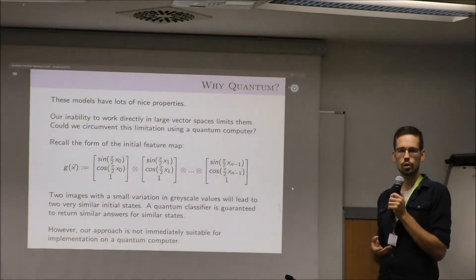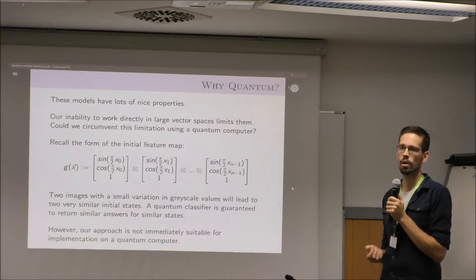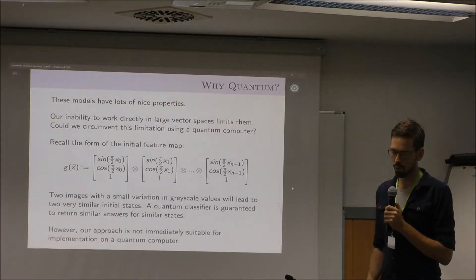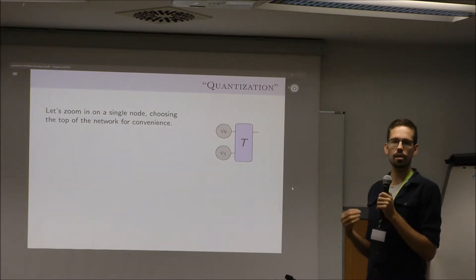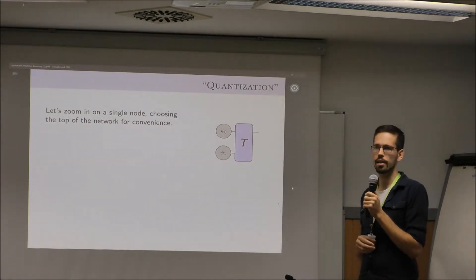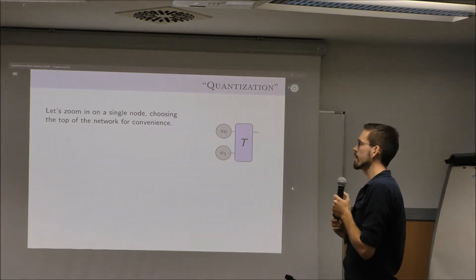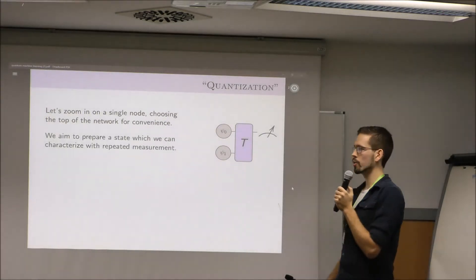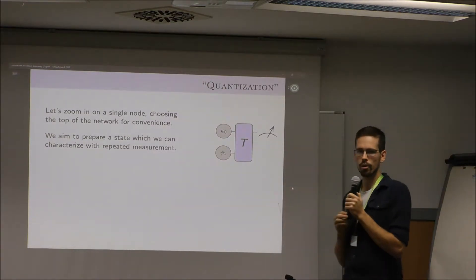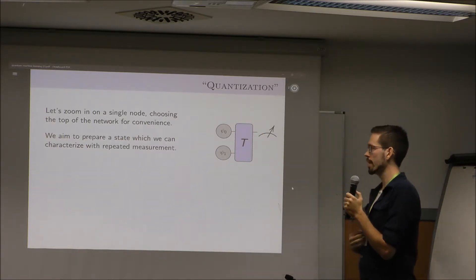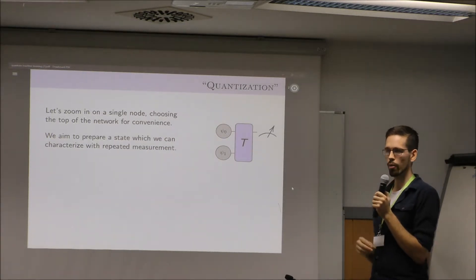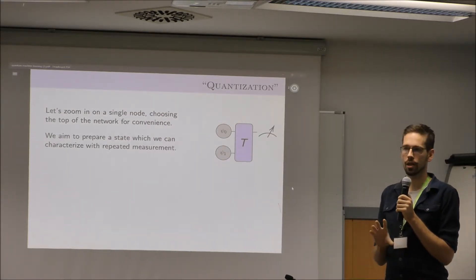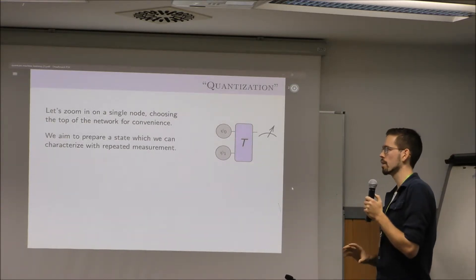That's another potential reason we'd be interested in implementing these models on a quantum computer, or using unitary models in general for machine learning. But the model I've described so far isn't immediately suitable for a quantum computer. The maps from the input to the output are all linear operators, but they're not necessarily unitary. Looking at a single node in the network: what we'd really like to do is give our nodes some inputs and have them prepare an output state characterizable by a reasonable number of repeated measurements. This operation needs to be something a quantum computer can implement. It's natural for the tensors to implement unitary rotations followed by projections, and in fact that's a natural outcome of the optimization procedures you'd use in practice.